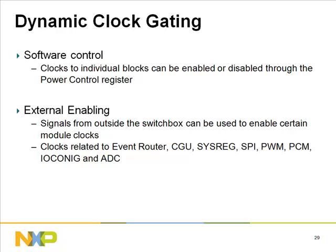Dynamic clock gating: clocks to individual blocks can be enabled or disabled through the power control register. External enabling signals from outside the switch box can enable certain module clocks related to the event router, CGU, sysreg, SPI, PWM, PCM, IO config, and ADC. For example, the event router clock is only needed during register reads and writes. By setting the external enable bit, the CGU generates this clock only on read/write requests, then automatically switches it off to conserve power.